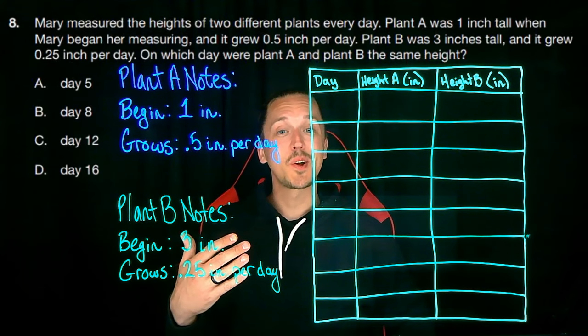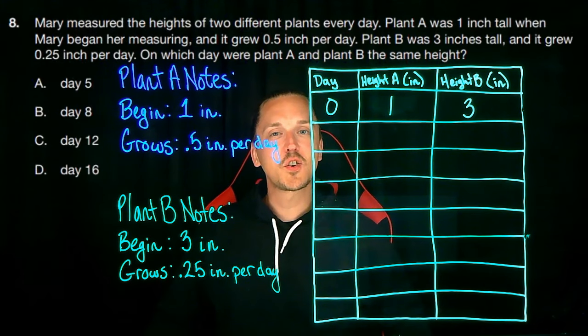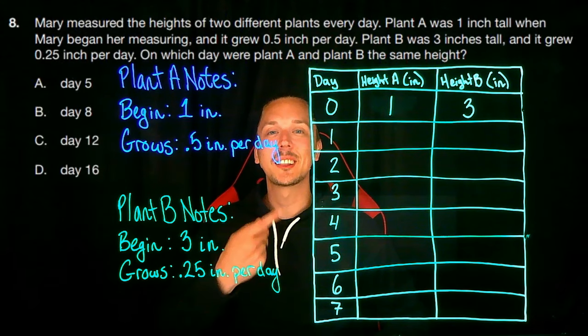We know that on day zero to start, plant A was one inch tall, and plant B was three inches tall. And let's increment our days by one, and we can note the increase in height each day like this.